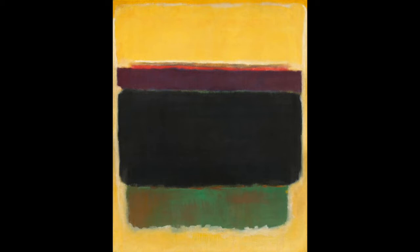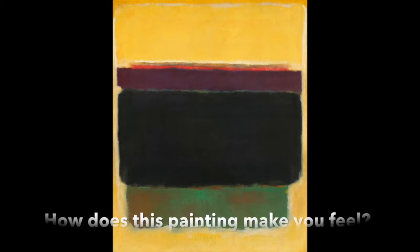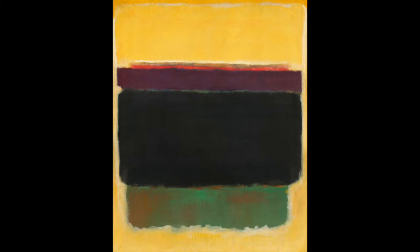You may think, I could paint that. But Mark Rothko actually used many layers of thinned paint to create depth and interest in his paintings. How many colors can you find? How do you feel when you look at the painting? How do you think he uses color to communicate?